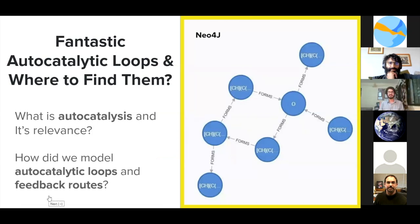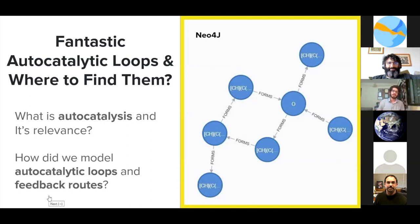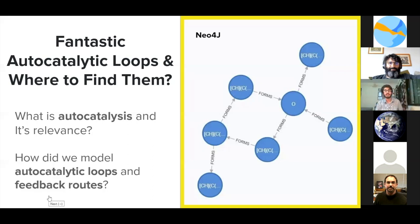Fantastic autocatalytic loops — and where to find them. What is autocatalysis? It's a bigger question. Autocatalysis is one of the main things we were trying to find in our project. To define it: in the earlier stages, billions of years ago, one molecule — let's call it A — reacted with another molecule B and formed C. C then reacted with A and B again and formed a chain. That's autocatalysis. We aimed to find autocatalysis through a software known as Neo4j.